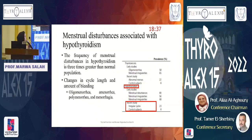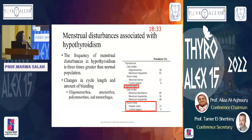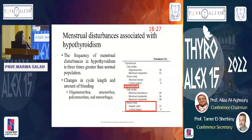The frequency of menstrual disturbance in hypothyroid patients is more common — up to three times — compared to the normal population, which includes changes in cycle length and amount of bleeding.